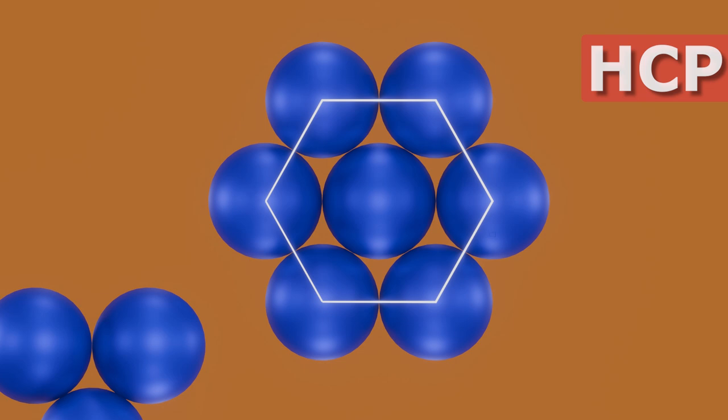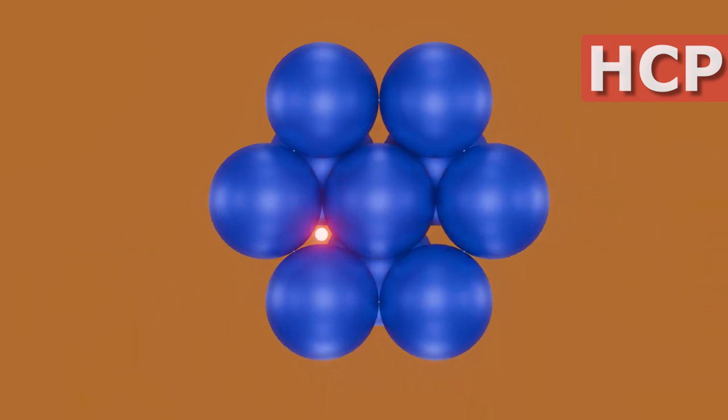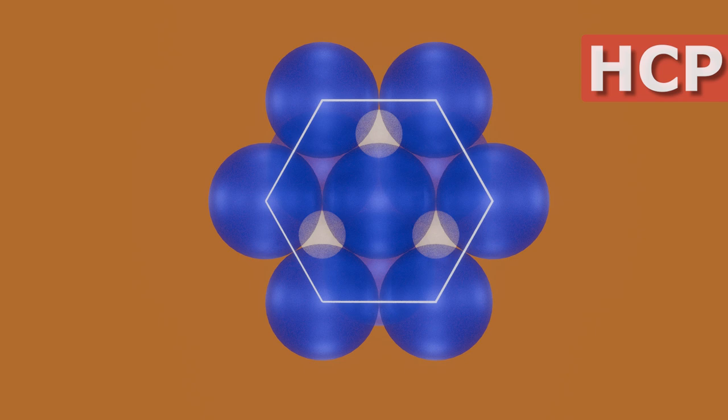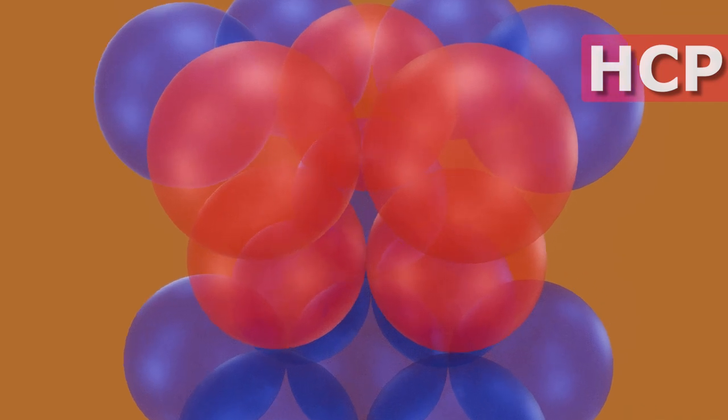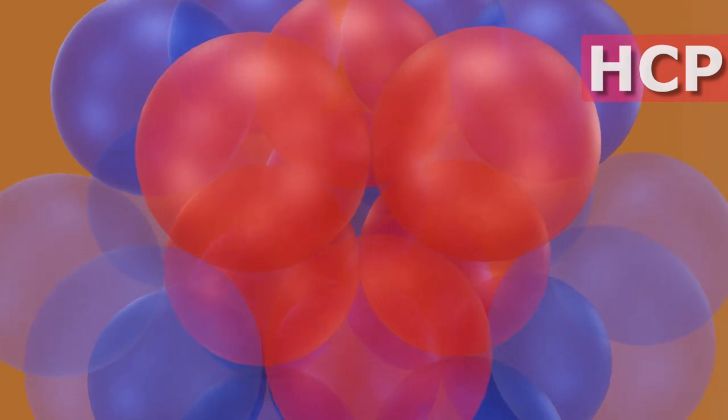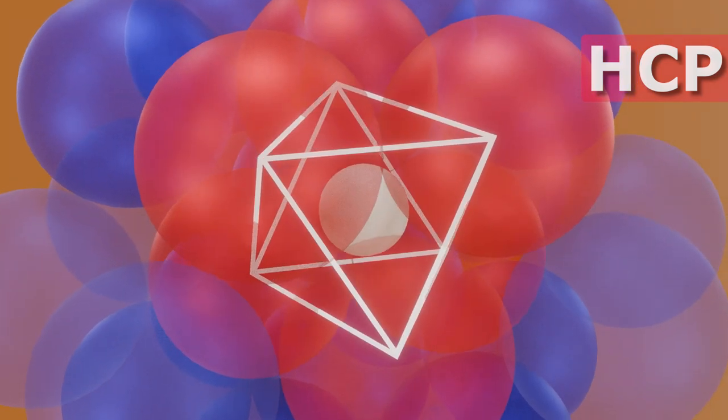In hexagonal close packing, there's always some space left through which we can see across. This is exactly where the octahedral voids lie. Using three upper layer atoms, two middle layer atoms, and one middle layer atom of an adjacent cell, an octahedral void is formed.